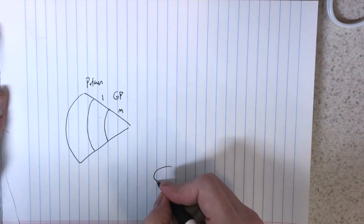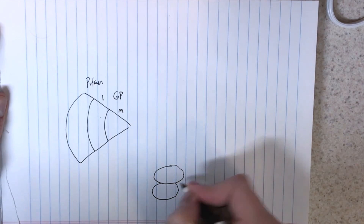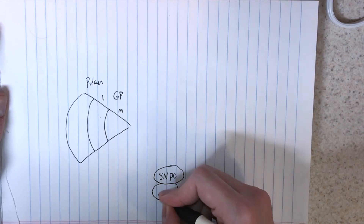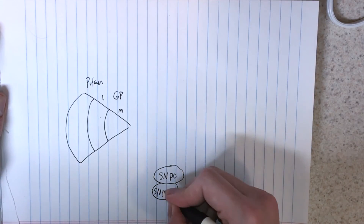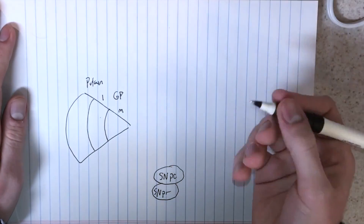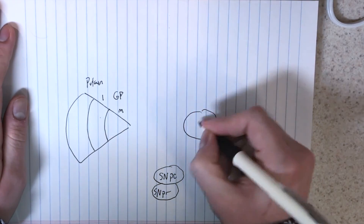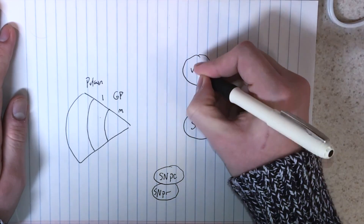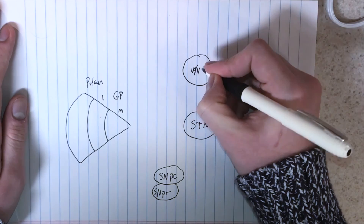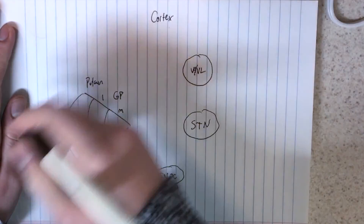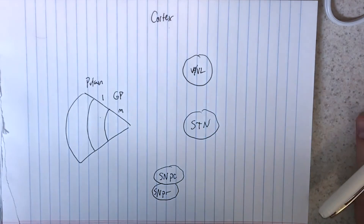Then we have two structures down here: the substantia nigra pars compacta and the substantia nigra pars reticulata — we're not really talking about the reticulata in this diagram, but it helps to remember it exists. Then we have the subthalamic nucleus, the thalamus — specifically VA and VL thalamus — and then the cortex.